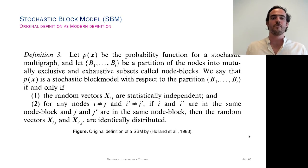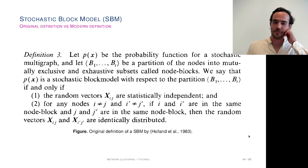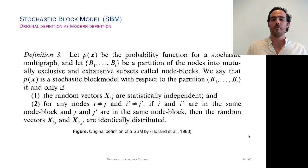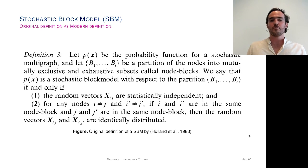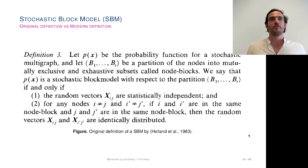Let us give the definition of this model as it was defined in the original paper by Holland, Laskey, Hall and Lennard in 1983. We have p(x), which is a probability function for a stochastic multi-graph. A multi-graph is a graph where objects interact in pairs, but interactions can be of several types.